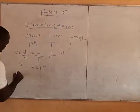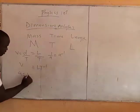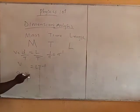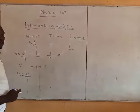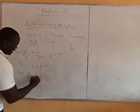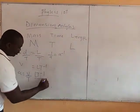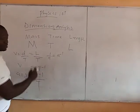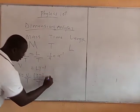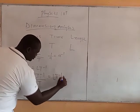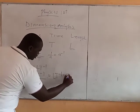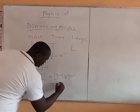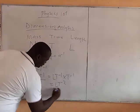Same way, we have that acceleration is velocity all over time. And you already know the dimension of velocity, which is LT⁻¹. So this will now be LT⁻¹ divided by T, which gives LT⁻².